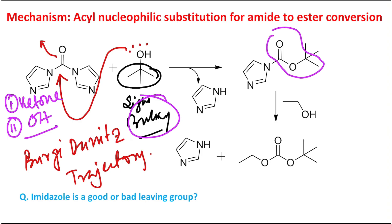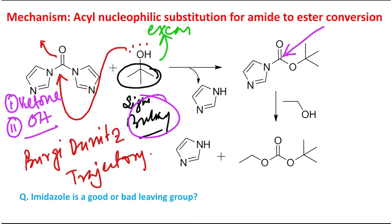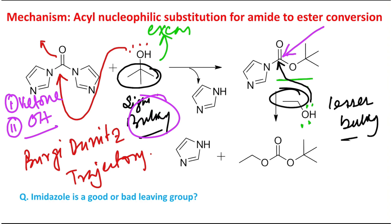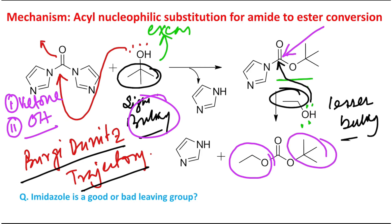As a result, the first reaction produces a tert-butyl ester on one side — you may consider it an ester-amide, where one part is the ester and the other remains an amide (imidazole side). Now, when the tert-butyl group is present, it introduces additional bulkiness around the carbonyl carbon, sterically protecting it. So even though tert-butanol was taken in excess, a second tert-butanol molecule cannot attack this carbonyl group.